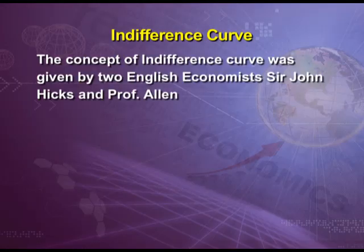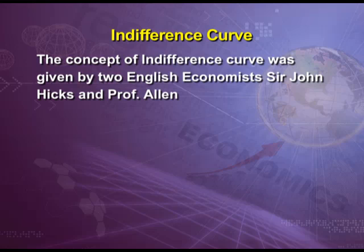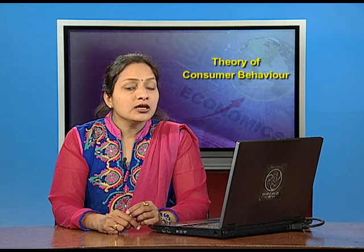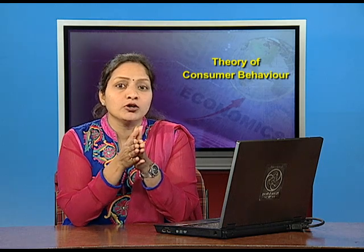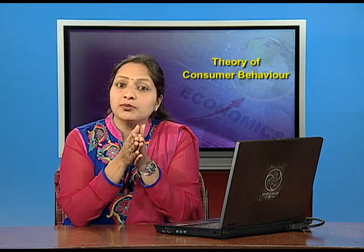The second concept of ordinal theory is the indifference curve. The concept of indifference curve was given by two English economists, Sir John Hicks and Professor Allen. Indifference curve means a curve which shows different combinations of two goods, and each of these combinations gives equal satisfaction to the consumer. Indifference curve shows consumer's neutrality or disinterest towards various combinations of two goods because they give the same level of satisfaction to him. The concept of indifference curve is true only under certain assumptions — if assumptions are not followed, the theory may fail.